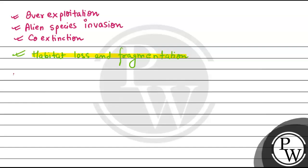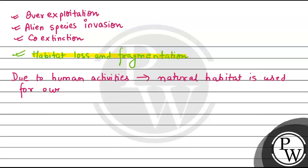Basically, due to human activities — mostly because of human activities — the natural habitat is used for our own purposes. Our purposes can include agriculture, for which we do deforestation, we remove forests, release chemicals, and to accommodate population growth we construct houses, buildings, and roads. To do that, we remove forests. But we know that forests are the natural habitat for the species we have.